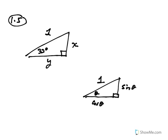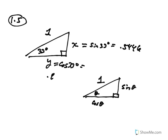So in this case, x is sine 33. You were given a trig table with many values, and sine 33 was given as 0.4546. For y, it's cosine 33, which was also given on the chart as 0.8387.